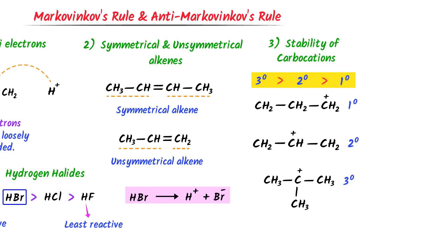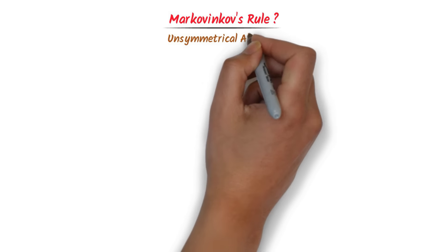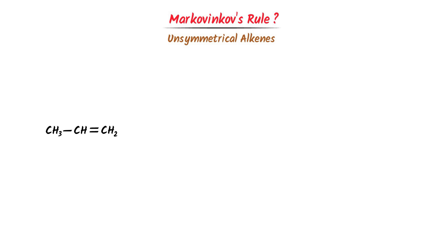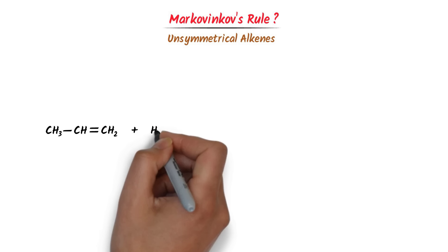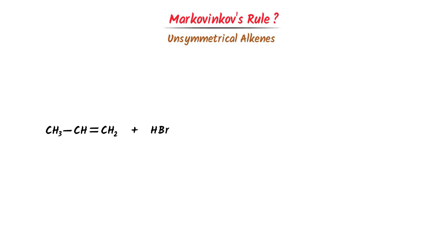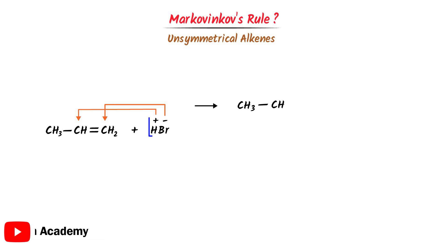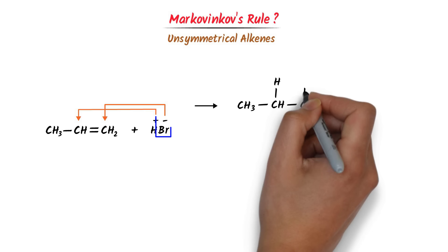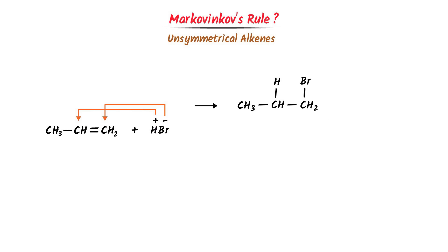Now, what is Markovnikov's rule? Remember that this rule is only used for unsymmetrical alkenes. Let's consider propene, which is an unsymmetrical alkene. I add hydrogen bromide to it and no other reagent is added. When the bond between hydrogen bromide breaks, we get hydrogen ion and bromine ion. This double bond contains pi electrons which are loosely bonded. Hydrogen ion will attack on the second carbon and bromine will attack on the first carbon, giving us 1-bromopropane.